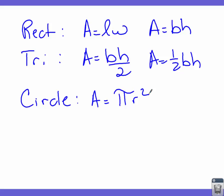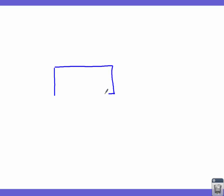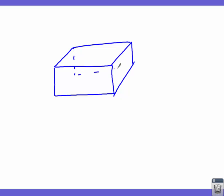Let's find the volume of a rectangular prism, a triangular prism, and a cylinder. A rectangular prism is nothing but a box. If I give you a box and say find its volume, we first need our formula, which is volume equals capital B times H.